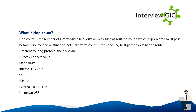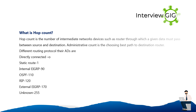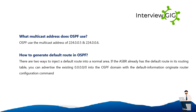Administrative distance is used for choosing the best path to a destination router. Different routing protocols and their AD values are: Directly connected 0, Static Route 1, Internal IGRP 90, OSPF 110, RIP 120, External IGRP 170, Unknown 255.